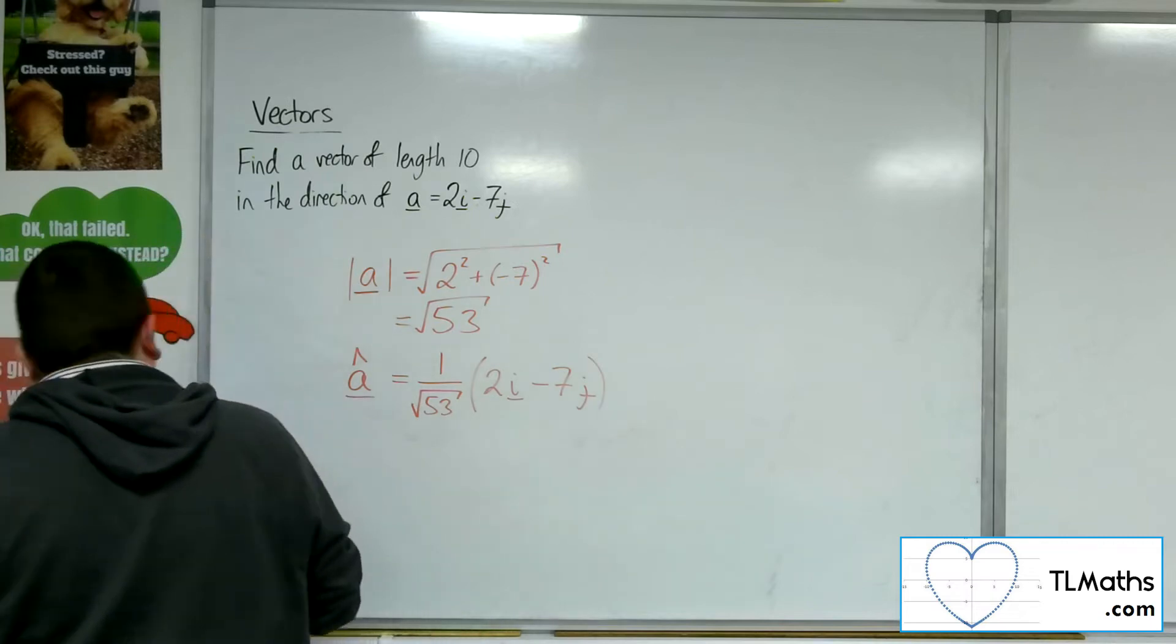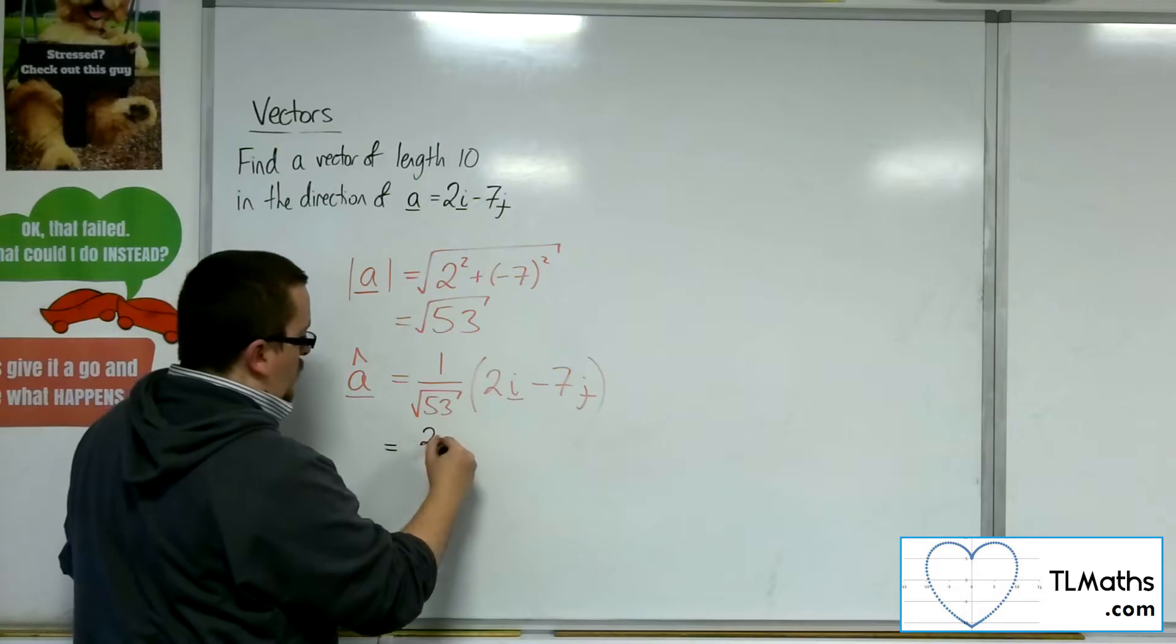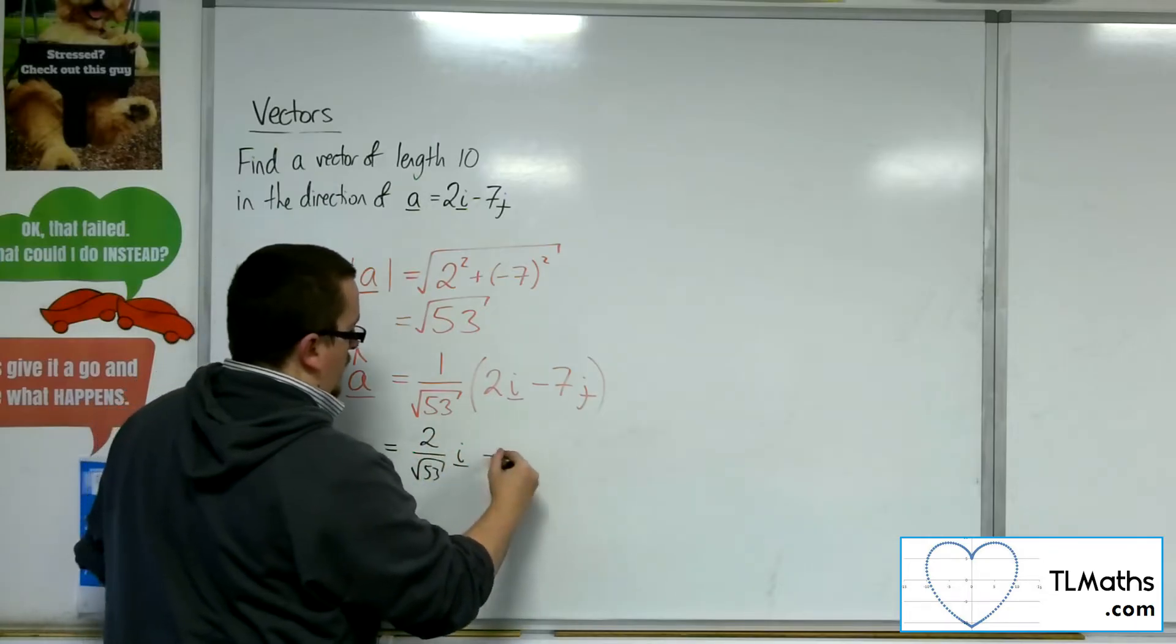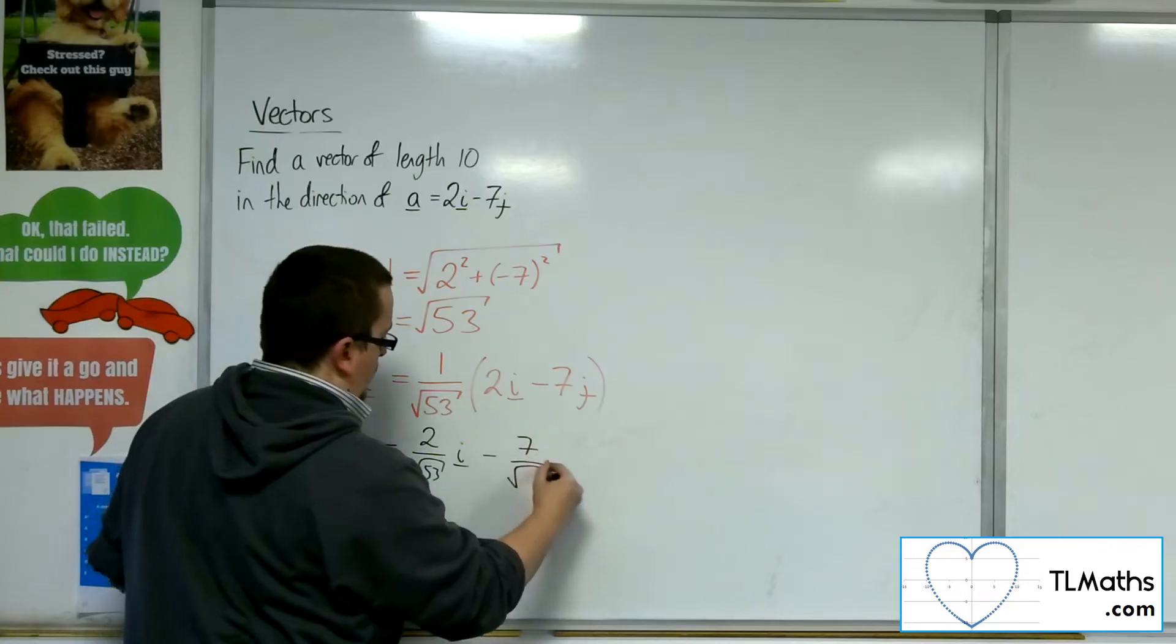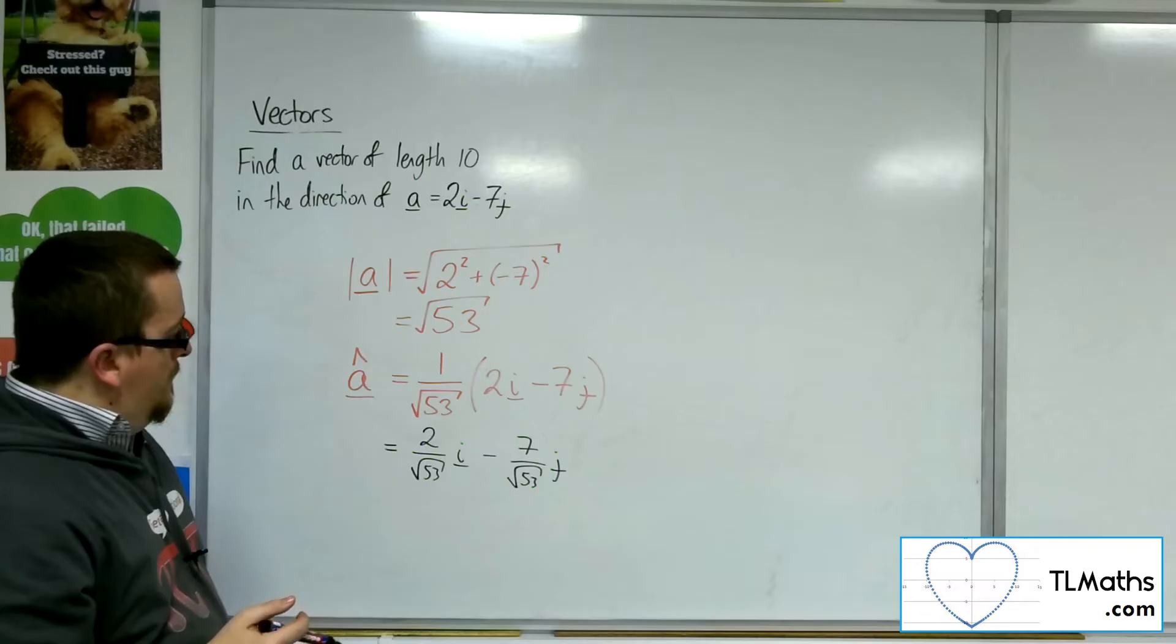What would happen is that I would now have the vector 2 over root 53I take away 7 over root 53J.